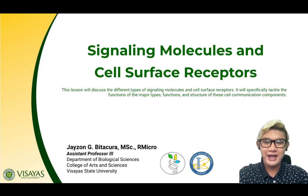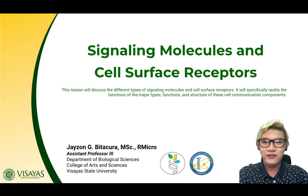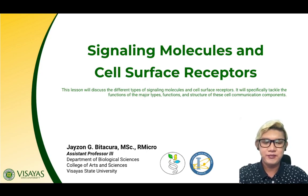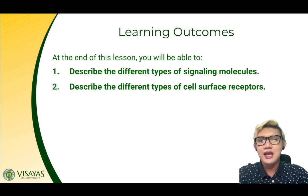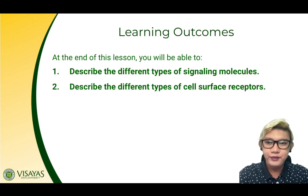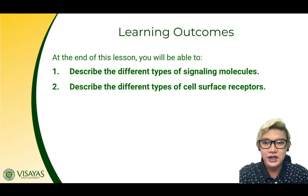Hello everyone. Our lesson for today is about signaling molecules and cell surface receptors. This lesson will discuss the different types of signaling molecules and cell surface receptors. Specifically, it will tackle the nature, types, functions, and structures of these cell communication components. At the end of this lesson, you will be able to describe the different types of signaling molecules and the different types of cell surface receptors.